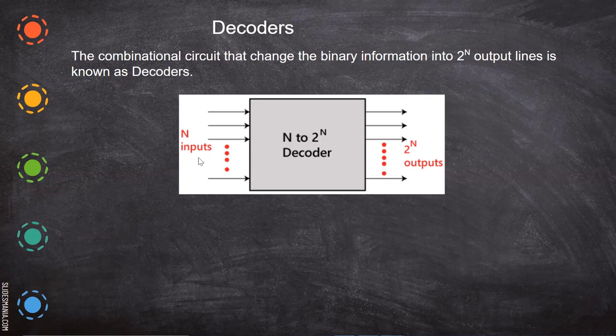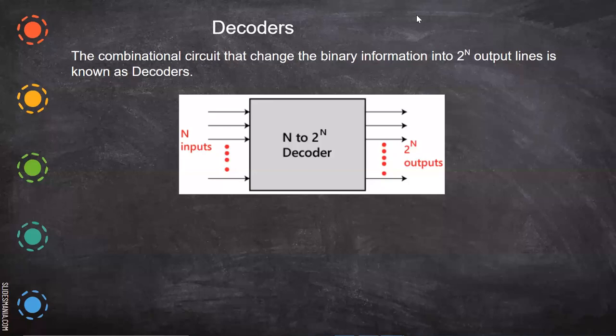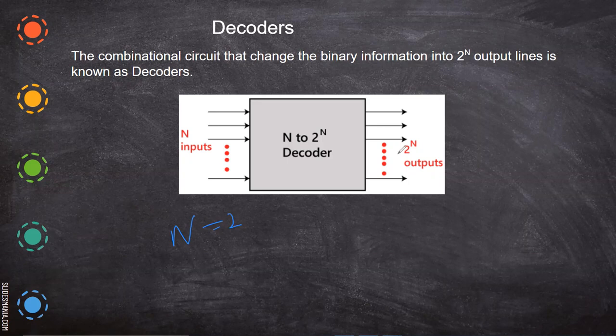For example, you have two input lines. When you have two input lines, one and two only, so n equals, let us consider n equal to 2. So the output will be 2 power n, which is nothing but 2 power 2, that is 4. So two inputs and you will have four outputs.